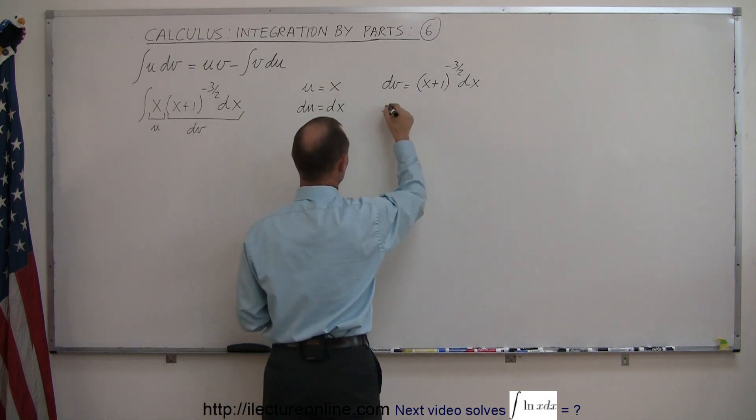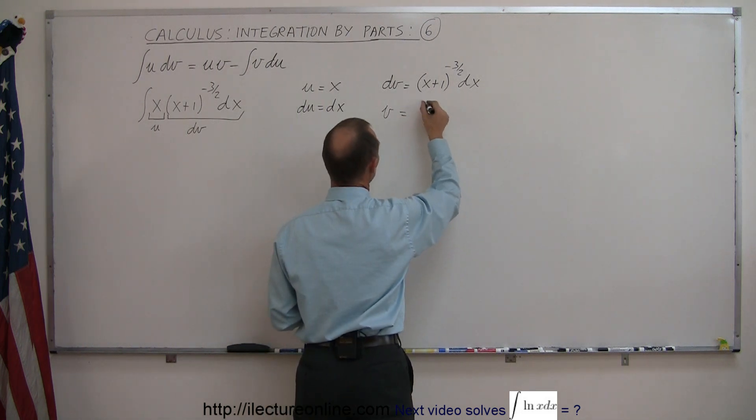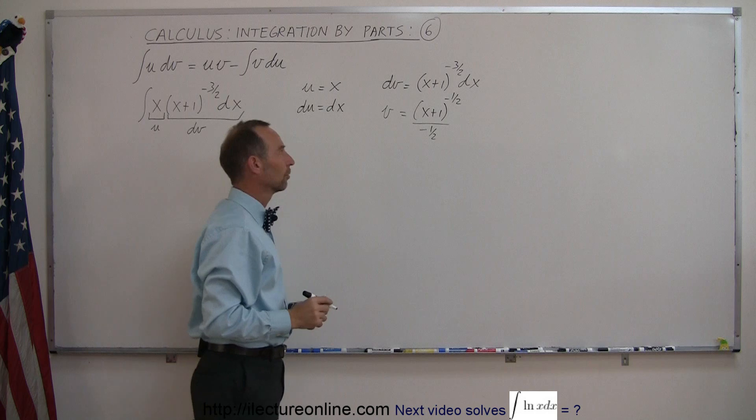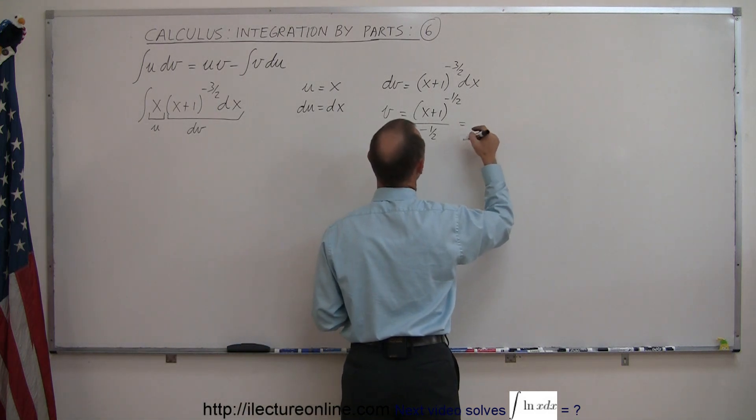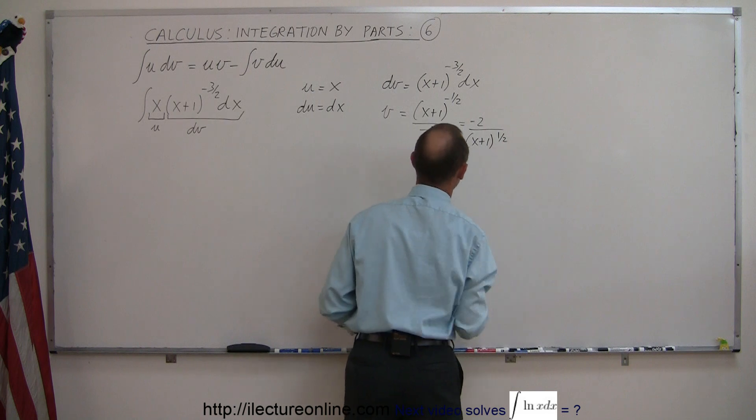And if we integrate this dv to get v, we need to add one to the exponent. So we get (x+1) to the minus 1 half power divided by the new exponent plus a constant of integration. So we can then write this as dividing by negative 1 half, the same as multiplying by negative 2 over (x+1) to the 1 half power.